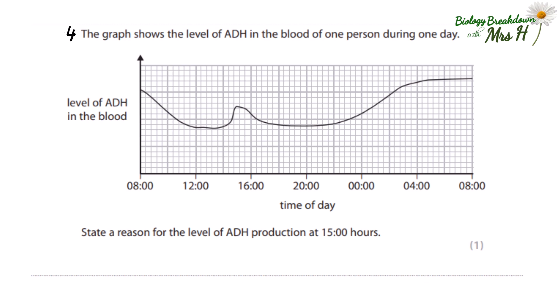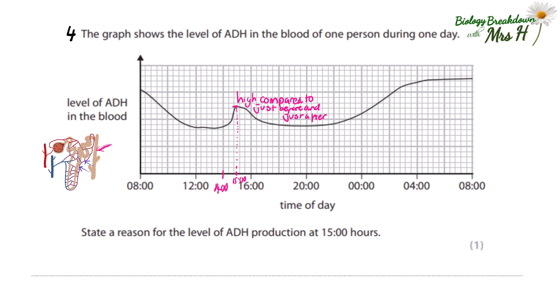Number four: the graph shows the level of ADH in the blood of one person during one day, with ADH level on the y-axis and time of day on the x-axis. We need to state a reason for the level of ADH production at 3 o'clock. At 1500 hours, the ADH level is high compared to just before and after. ADH makes the collecting duct more permeable, so more water is reabsorbed into the blood. The reason could be that the person is dehydrated, or they have been exercising and sweating, losing water and needing to reabsorb more.